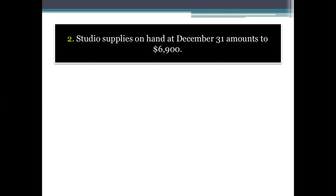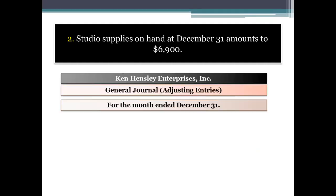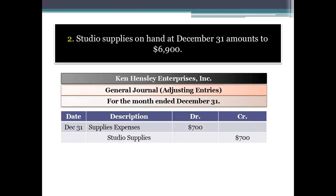Second transaction: studio supplies on hand at December 31st amounts to $6,900. This is basically office supplies — the studio supplies on hand are $6,900. We have to calculate the office supplies consumed — we calculate the amount of supplies consumed.